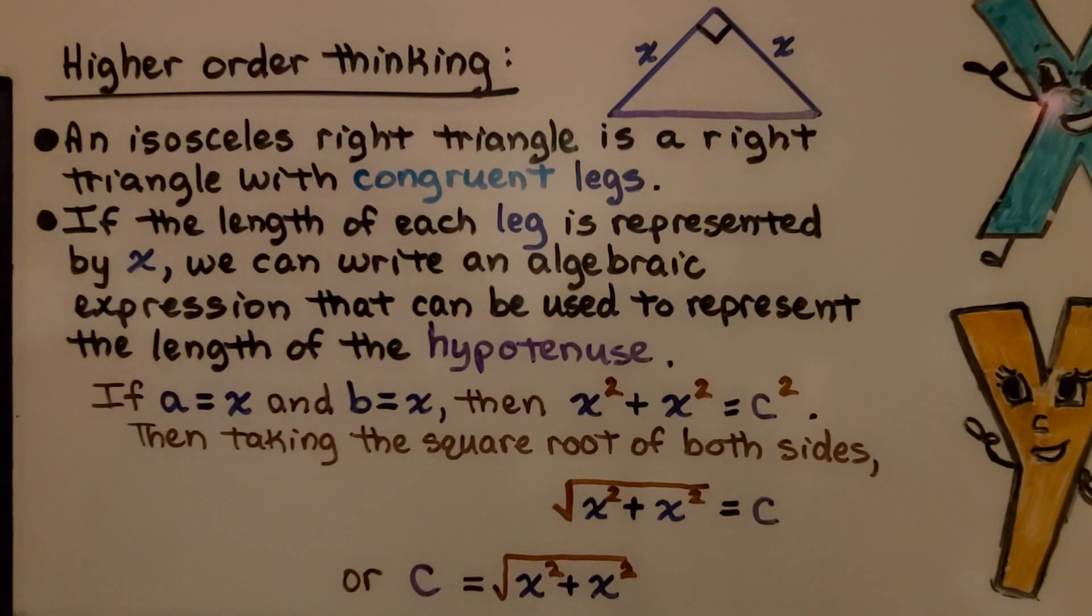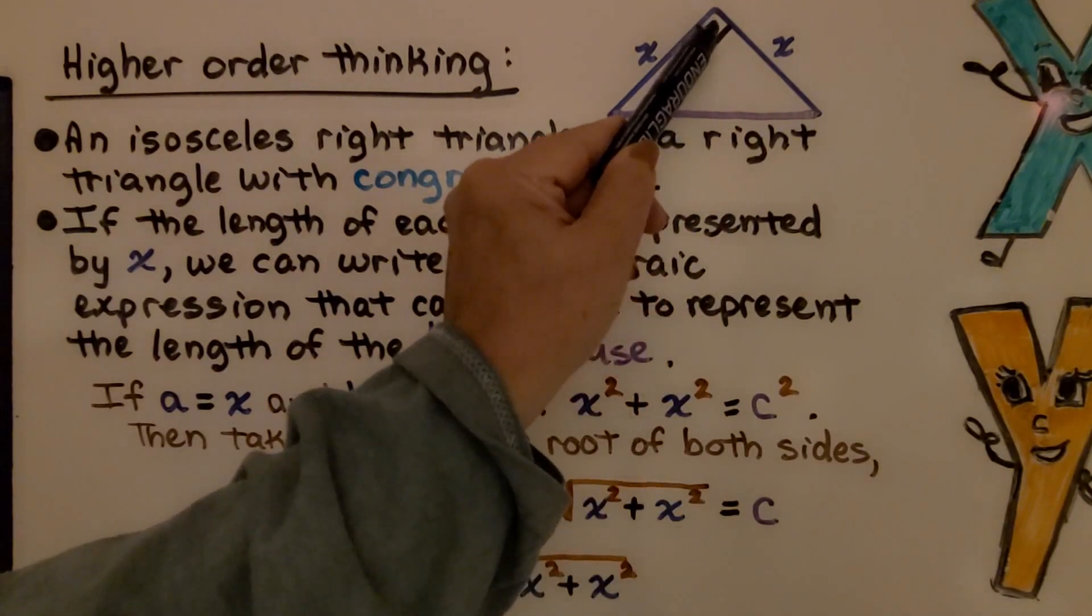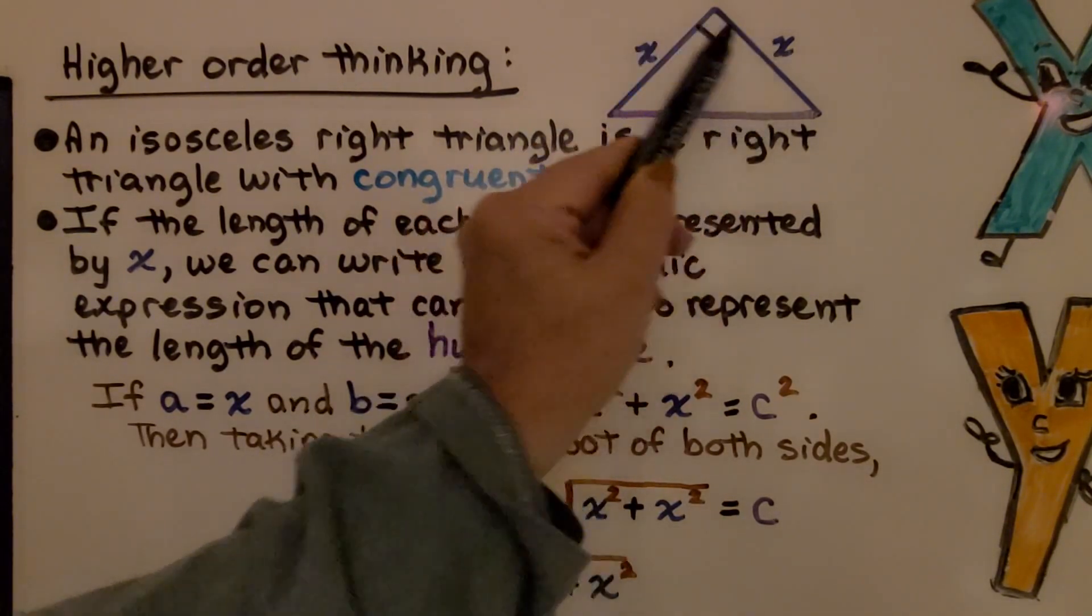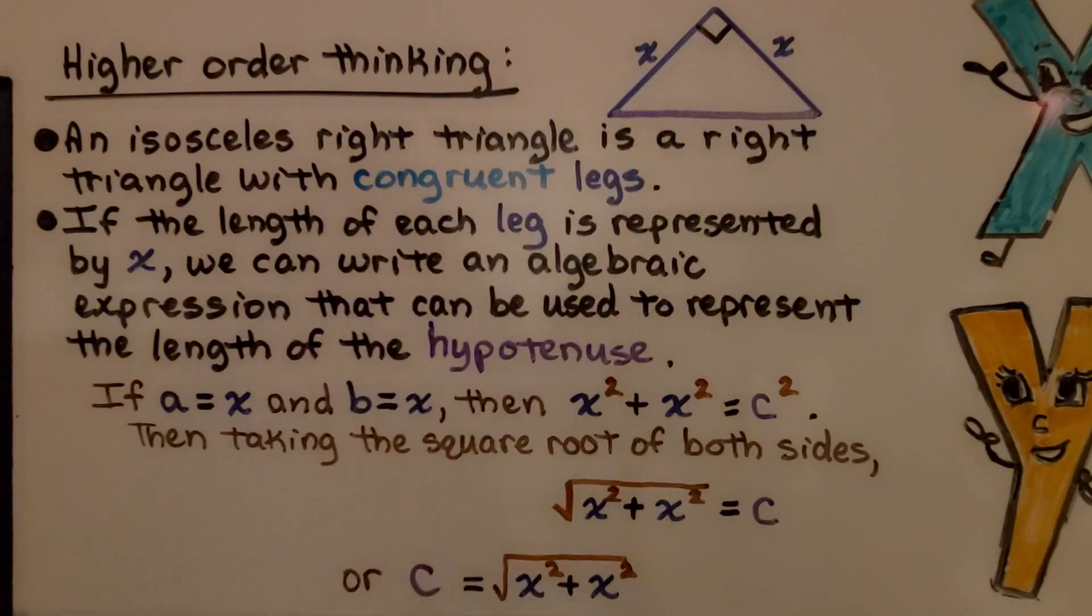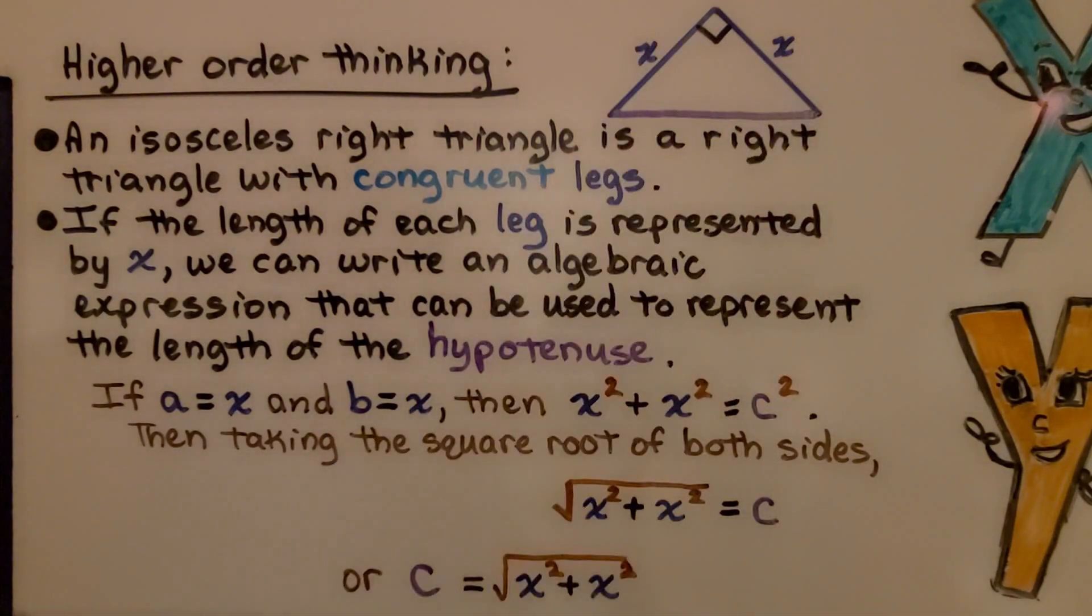Let's try some higher order thinking. An isosceles right triangle is a right triangle with congruent legs. Here we have an isosceles right triangle, here is the right angle, and the legs are congruent. Here is the hypotenuse. If the length of each leg is represented by x, because they are the same, they are both x, we can write an algebraic expression that can be used to represent the length of the hypotenuse.